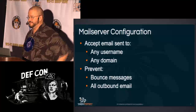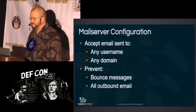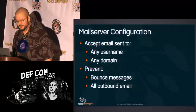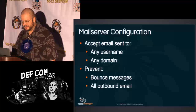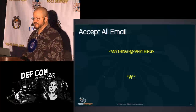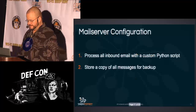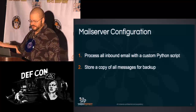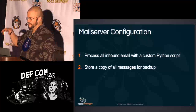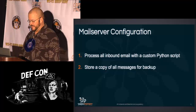The mail server configuration goal is very simple: you want to accept email sent to any username and any domain — completely open — but you don't want it to reply to anything, no bounce messages, no outbound email at all. I change the host firewall so it can't do anything outbound. Accept star-at-star, everything. You get a copy of all messages divided up by email address, either in Mbox or Maildir format.